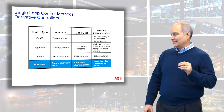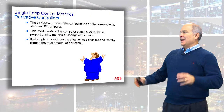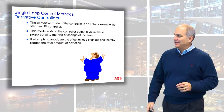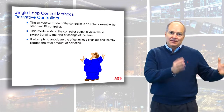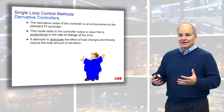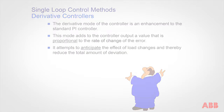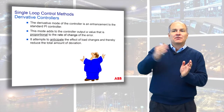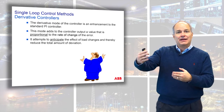Derivative deals with the rate of change of the error, and its job is to slow down a changing error. The derivative mode is an enhancement to the standard PI controller — you won't typically find derivative by itself, it usually comes with PI. This mode adds to the controller output a value proportional to the rate of change of the error. Based on the current slope, it anticipates where the error is going to go and makes a correction now, so the process doesn't go there.